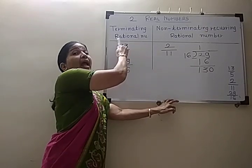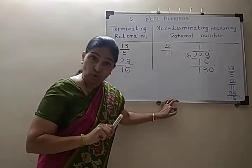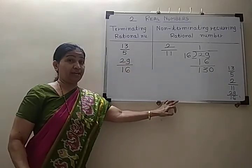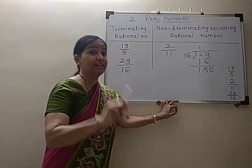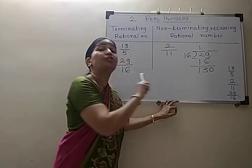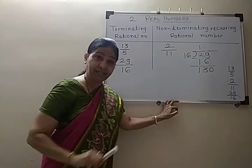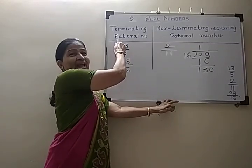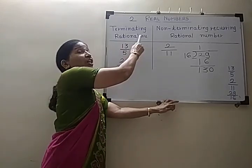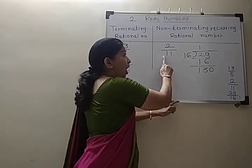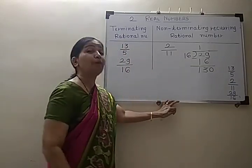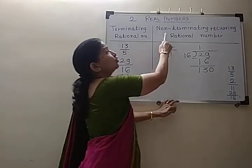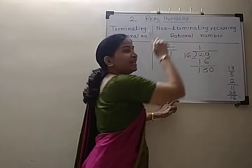So, when we divide the numerator by the denominator, if the process completes — if the remainder comes to 0 — that means it terminates, and it is called a terminating rational number. If it is not stopping, if the remainder is not coming to 0, then it is non-terminating.